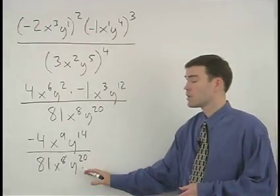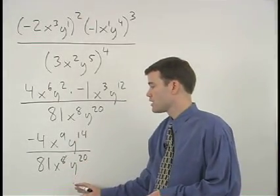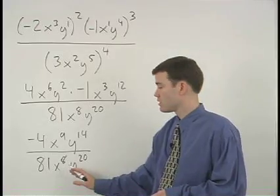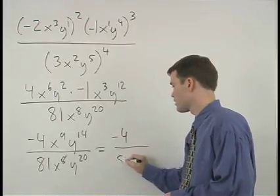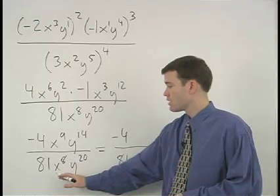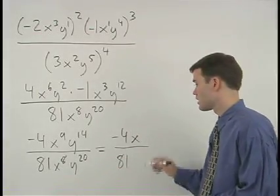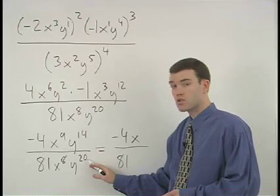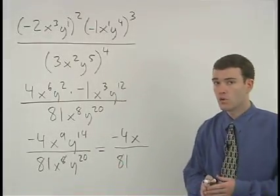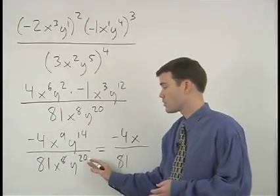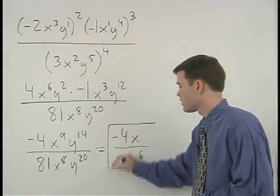Finally, we apply our quotient rule. Remember that the quotient rule states that when you're dividing powers that have the same base, simply subtract their exponents. So we have our coefficients of negative 4 over 81. For our x's, we take 9 minus 8, which is 1, so we have x to the 1st, or x. And notice that for our y's, the exponent in the denominator is greater than the exponent in the numerator. In this situation, we still take the difference between our exponents, which is 6, but the y to the 6th goes in the denominator of your answer.